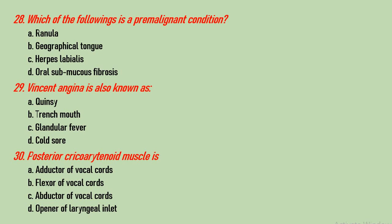Question number 29: Vincent's angina is also known as Quinsy, Trench mouth, glandular fever, or cold sore? The correct answer is B, Trench mouth. Quinsy is peritonsillar abscess, cold sore is herpes labialis, and glandular fever is infectious mononucleosis. Question number 30: the posterior cricoarytenoid muscle is adductor, flexor, abductor, or opener of the laryngeal inlet? The correct answer is C — it is the sole abductor of the vocal cords.